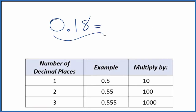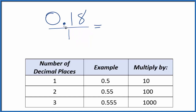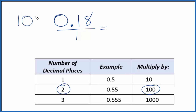Let's express 0.18 as a fraction — a numerator over a denominator. The first thing we want to do is think of 0.18 as 0.18 over 1. This is a start of our fraction. Next, we can see we have 1, 2 — so we have two decimal places. That means we're going to multiply by 100, both the top and the bottom by 100.